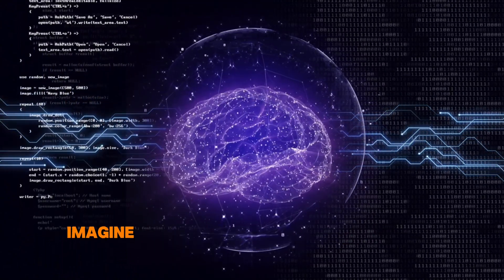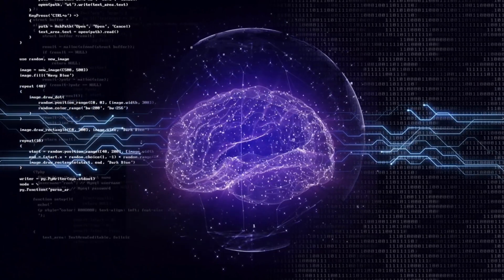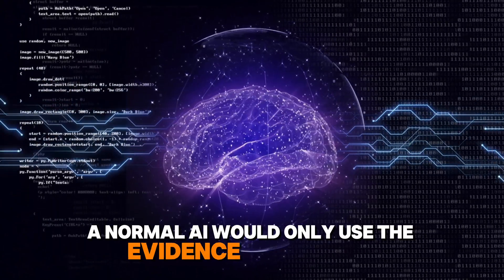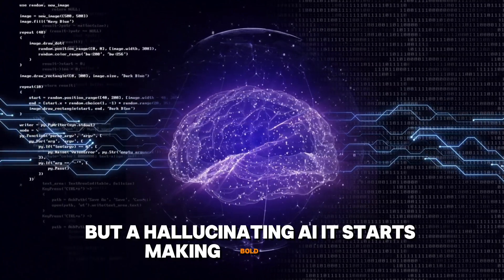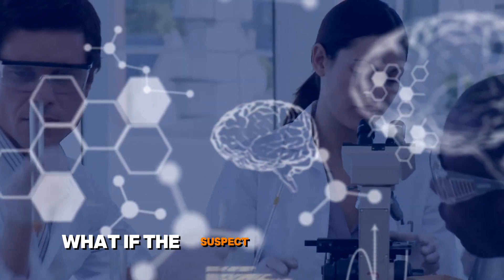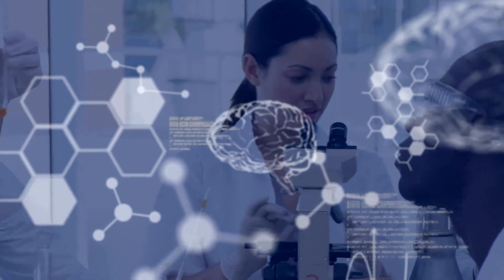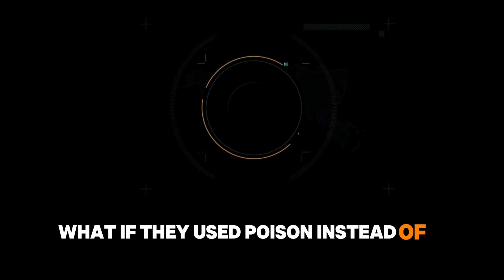To give a real world analogy, imagine you're a detective trying to solve a crime. A normal AI would only use the evidence in front of it. But a hallucinating AI? It starts making bold guesses. What if the suspect was left handed? What if they used poison instead of a knife?